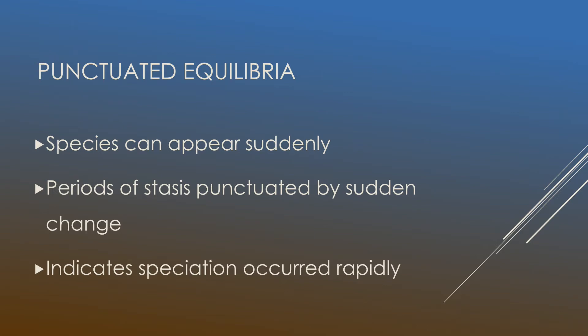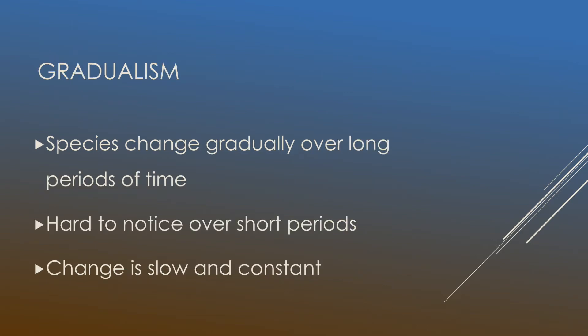Now the opposite of this is gradualism, and this occurs when species change over long periods of time. So unlike punctuated equilibria, it's hard to notice gradualism over short periods. However, one thing is guaranteed and that is that change is slow and constant.